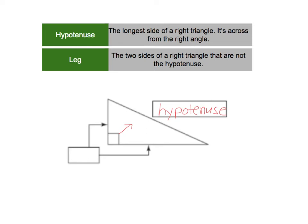The leg is the two sides of a right triangle that are not the hypotenuse. So this is the legs. Each of those is a leg.